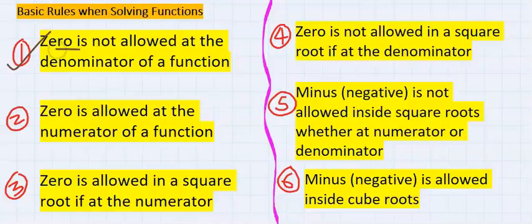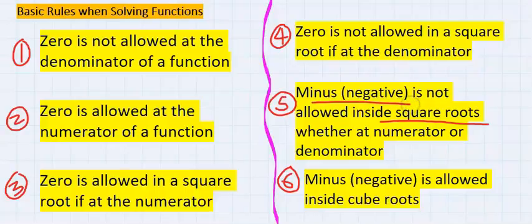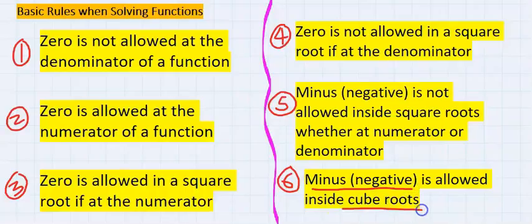Zero is not allowed at the denominator of a function. For a square root, negative is not allowed both at the numerator or the denominator. However, for a cubic function, minus is allowed inside a cube root.